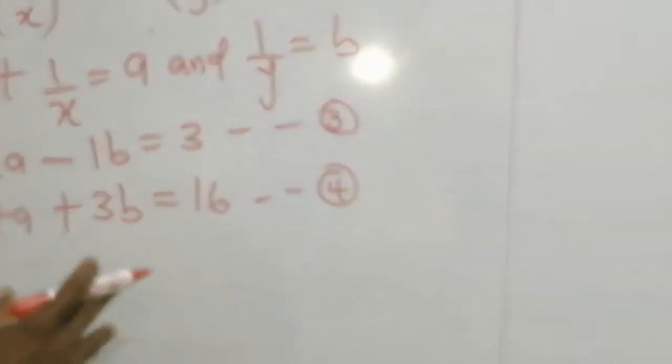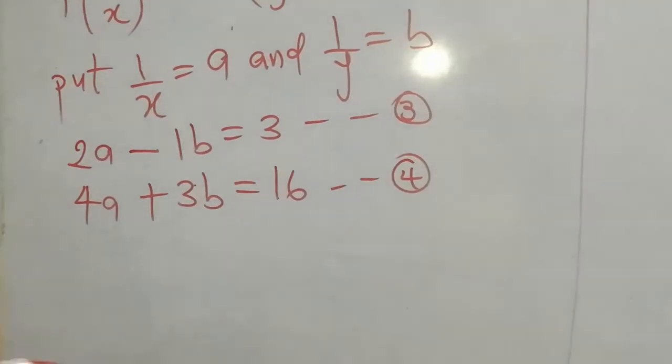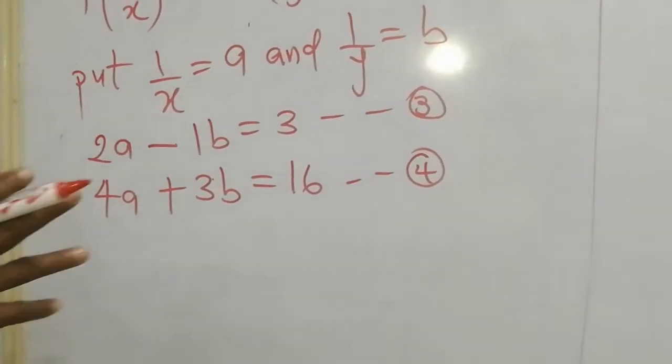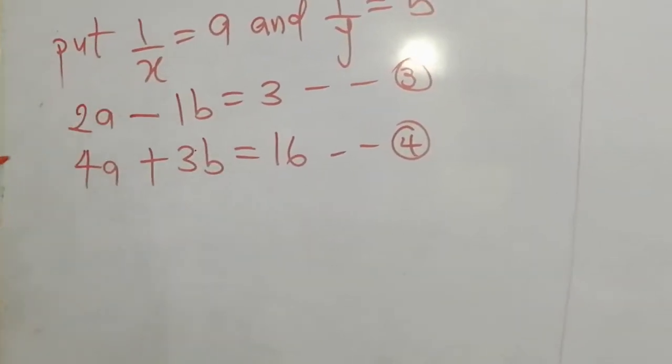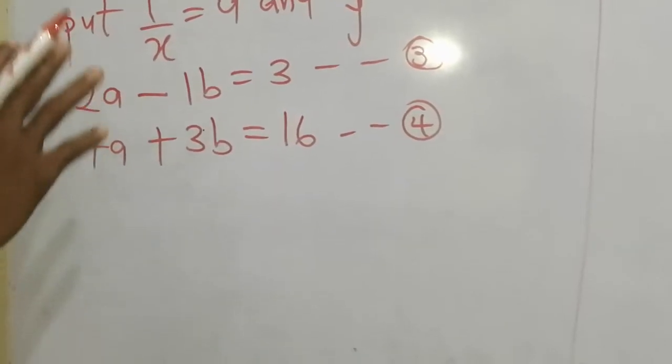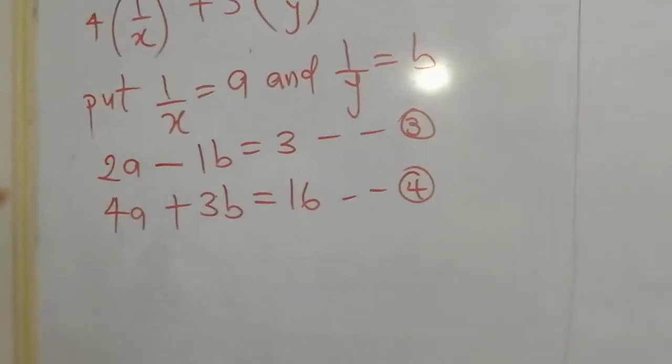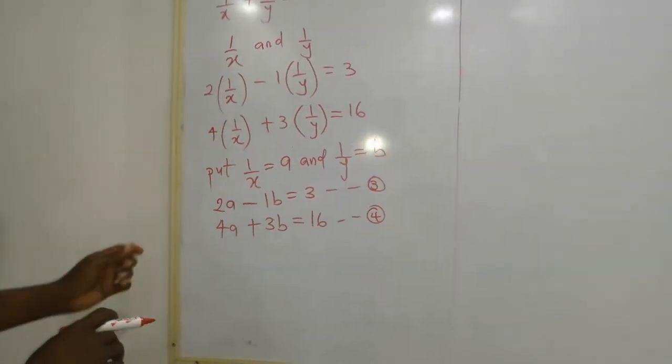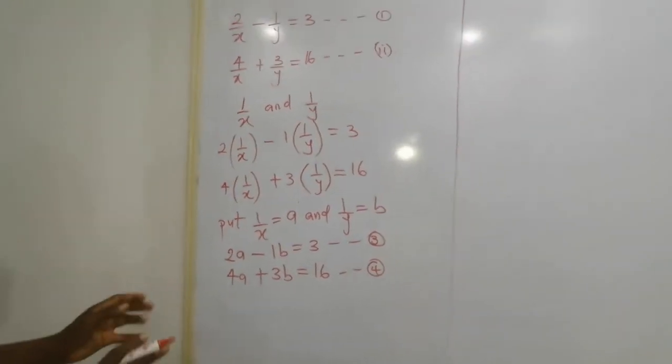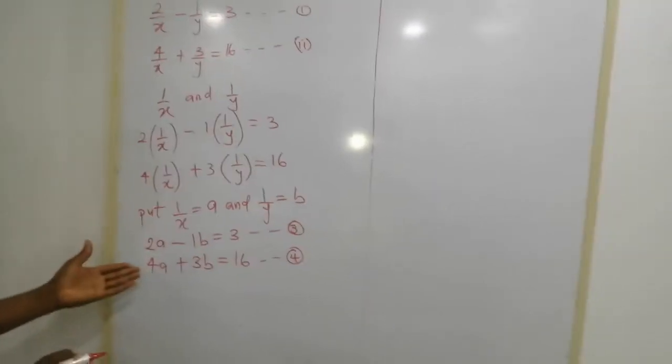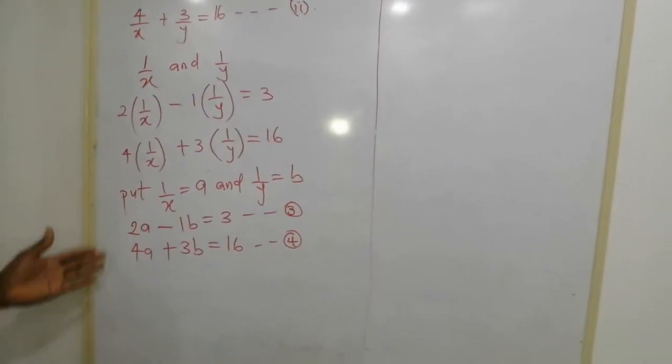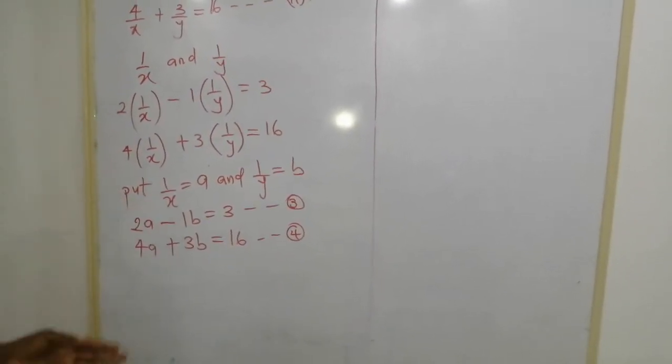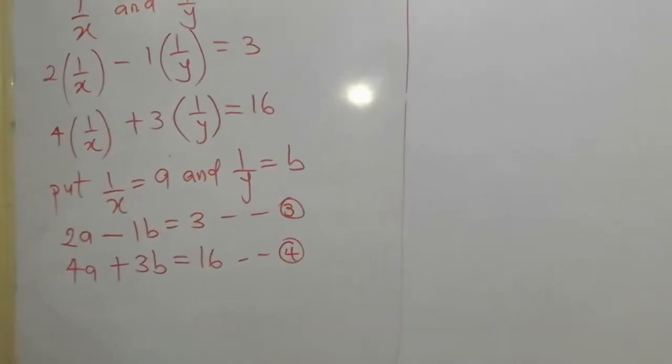So we are going to resolve this simultaneously. To resolve this simultaneously, you follow the rules of simultaneous equation using elimination method. To eliminate, the rule says you look for where the coefficients are the same. Looking at variable a, coefficients are not the same. On b, they are not the same.